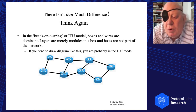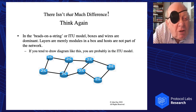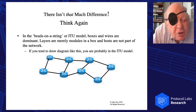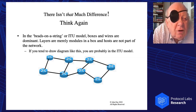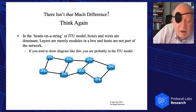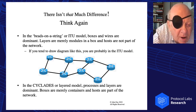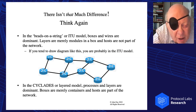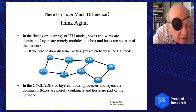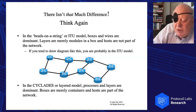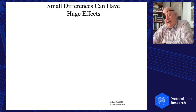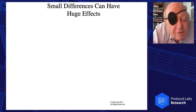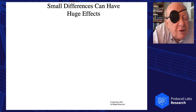These were two entirely different models. In what I call the 'beads on a string' or ITU model, boxes and wires are dominant, layers are merely modules in a box, and hosts are not really part of the network. In the Cyclades or layered model, processes and layers are dominant, boxes are merely containers, and hosts are part of the network. Small differences here can make huge effects — and we've already gone past three of them.